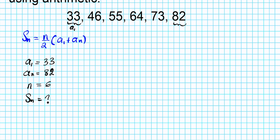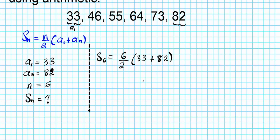Let's go ahead and input all these pieces of information into the sum formula. S sub 6 — the sum of the first six terms — equals 6 over 2 times (33 plus 82). We can simplify: 6 over 2 is 3, and 33 plus 82 is 115. So we have 3 times 115, which is 345.